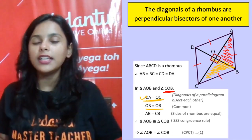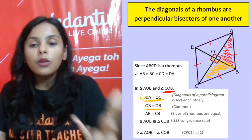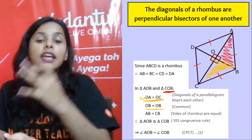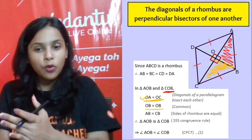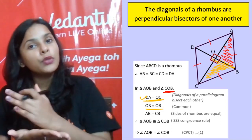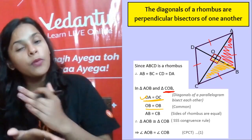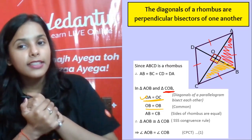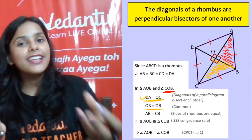Congruency proof done. Now, can you say that angle AOB is equal to angle COB? Yes — because of CPCT (Corresponding Parts of Congruent Triangles). Therefore this angle is equal to this angle due to CPCT.